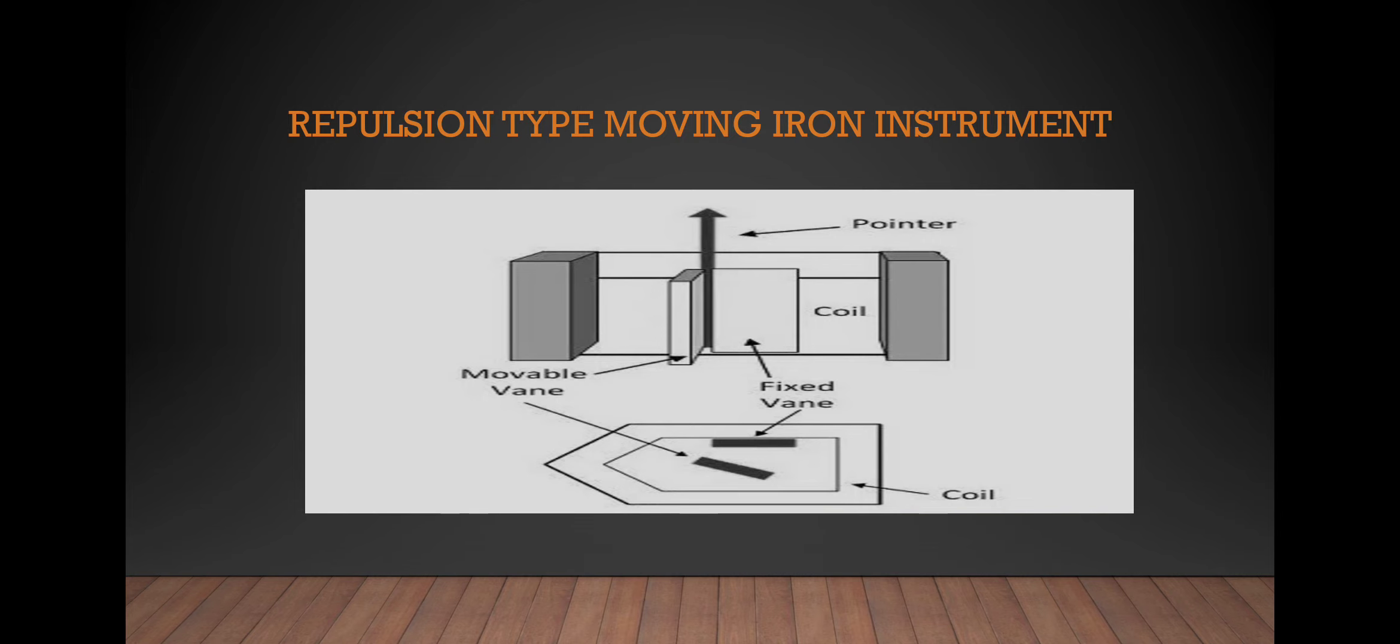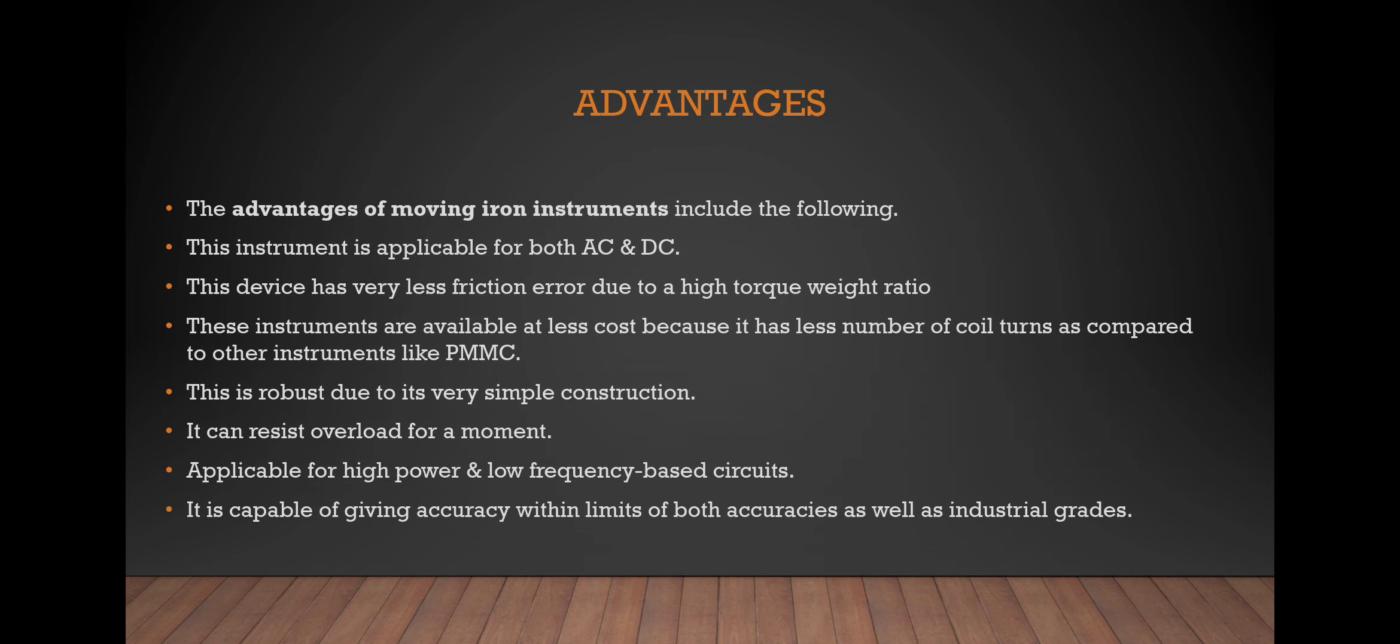The advantages of moving iron instruments are: It is applicable for both AC and DC. These devices have very low friction error. It has high torque weight ratio. These instruments are available at less cost. It has less number of coil turns compared to other instruments. It is very simple in construction. It can resist overload for a moment. It is applicable for high power and low frequency based circuits.